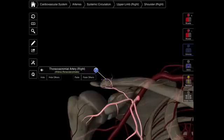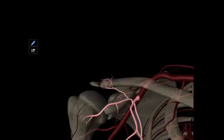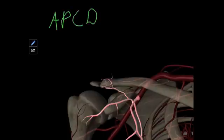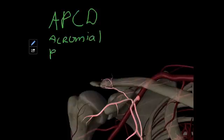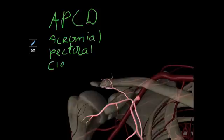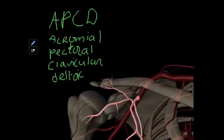The app doesn't show the individual names of those branches, but I want you to remember them. An easy way to remember them is A, P, C, D — acromial, pectoral, clavicular, and deltoid. That gives you an idea of where those arteries are going. If you don't like A-P-C-D, you can remember it as C, A, D, P — cadavers are dead people. Whichever mnemonic device you want to use, you can use.